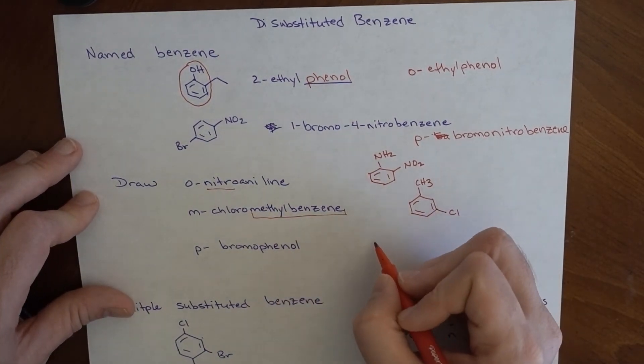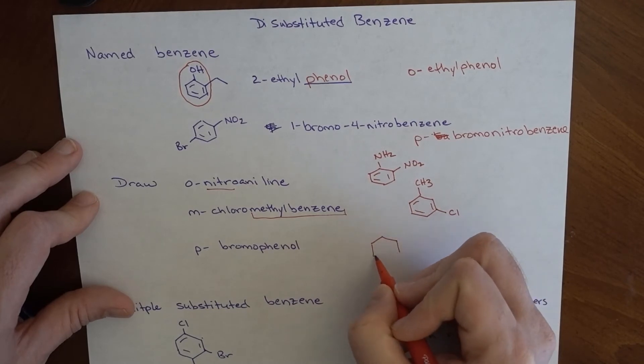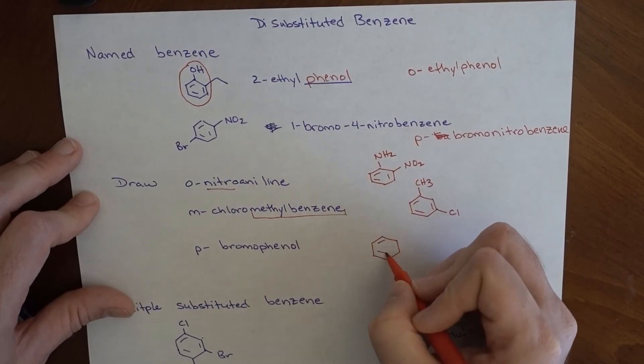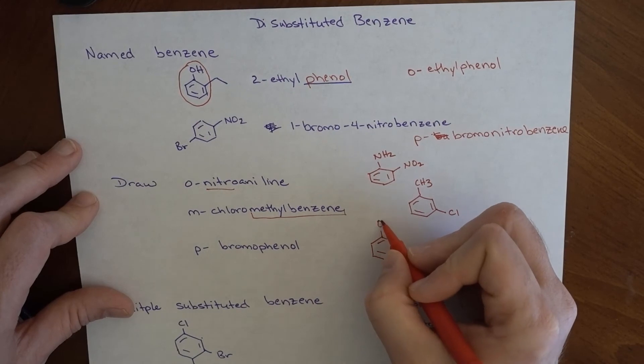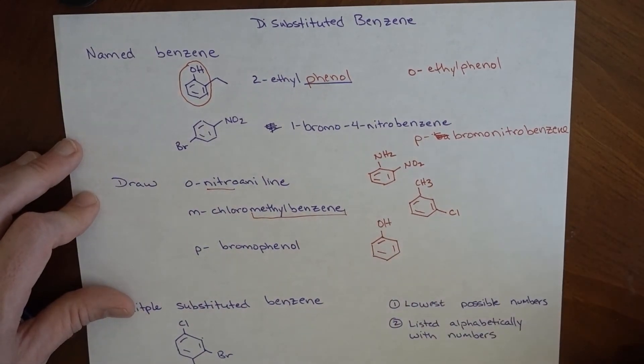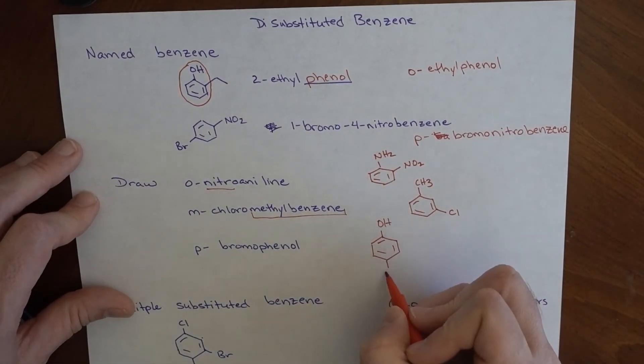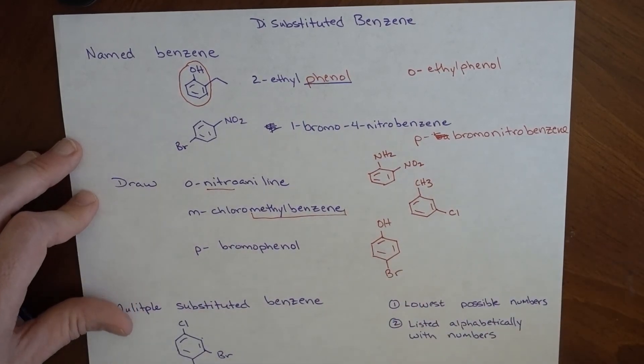And then here, para-bromo-phenol. Here is phenol. Phenol means it has the OH, and then para-bromo, Br goes in the para position.